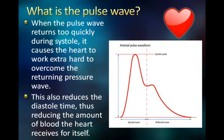When a pulse wave returns too quickly during systole — the first pumping action of the heart — it causes the heart to work extra hard to overcome the returning pressure wave. This also reduces the diastole time, thus reducing the amount of blood the heart receives for itself.